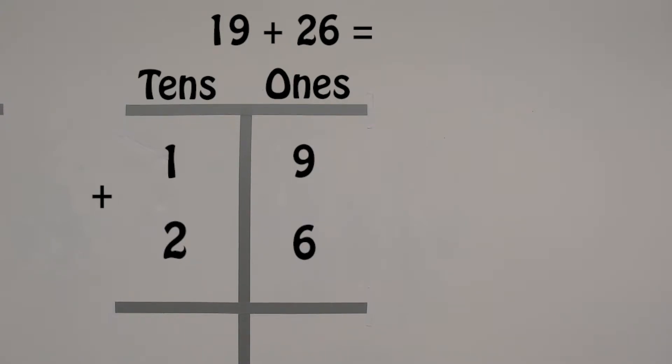Let's add the ones. 9 ones plus 6 ones equal 15 ones. We renamed 10 ones as 1 ten and moved it to the tens place.